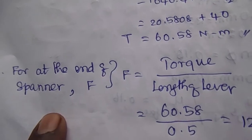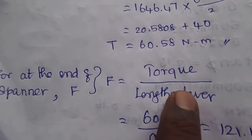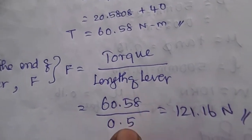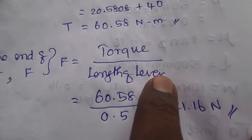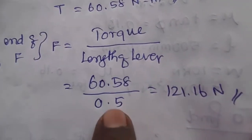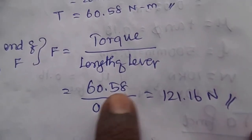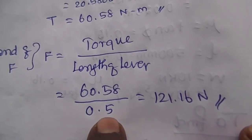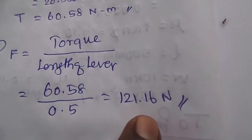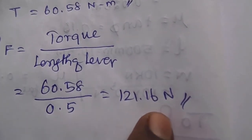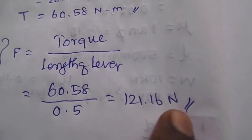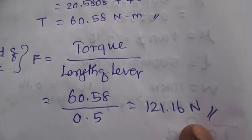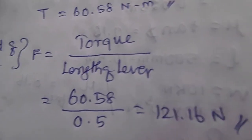At the end of the spanner, the force equals torque divided by the length of the lever, which is the length of the spanner. That is 60.58 divided by 0.5 m, giving a force of 121.16 N. Thank you for watching this video.